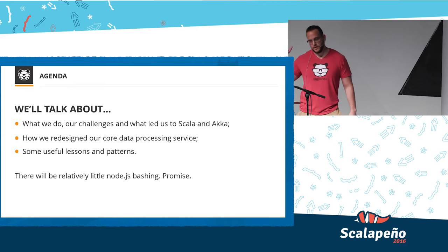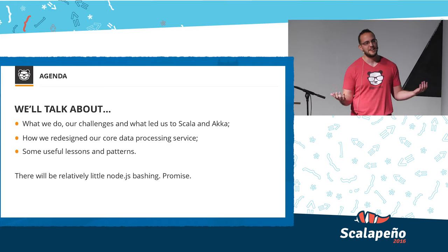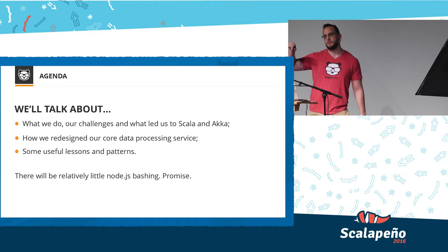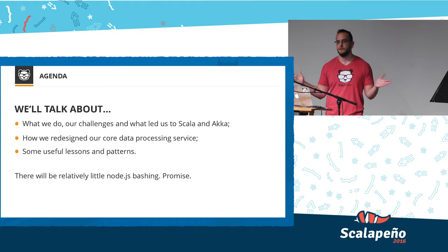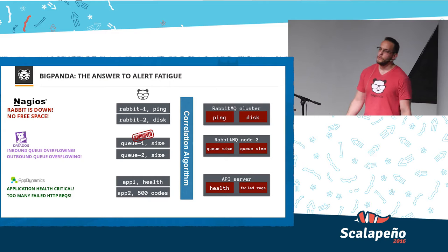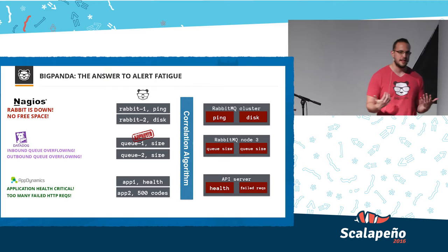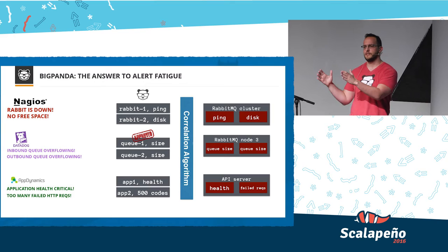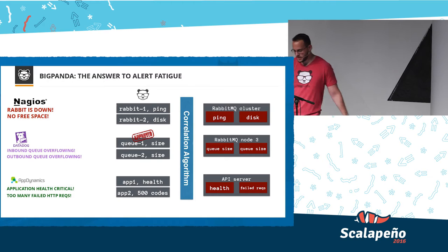There will be relatively little Node.js bashing, I promise, but I will spend some time talking about the disadvantages and why we chose to migrate off of it. BigPanda is the answer to alert fatigue. We make software for NOC teams. A NOC is a network operations center. If you've ever sat in a network operations center with all the blinking lights and the red alerts and the monitoring systems, you would have known why it's called fatigue.